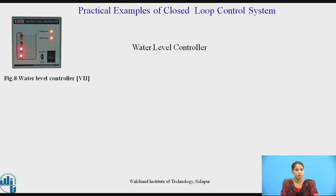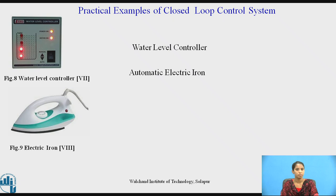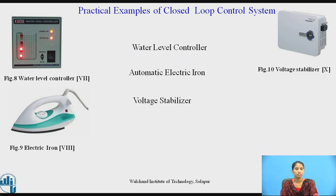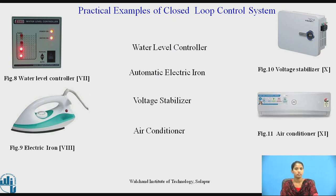These are the closed-loop control systems. First is a water level controller — when the level of water reaches the desired level, the supply is switched off automatically. Next is an electric iron, where the heating element adjusts itself according to the temperature we need. Then a voltage stabilizer, where the desired voltage is inputted to the appliance. And lastly, an air conditioner, where the desired temperature can be obtained and maintained.